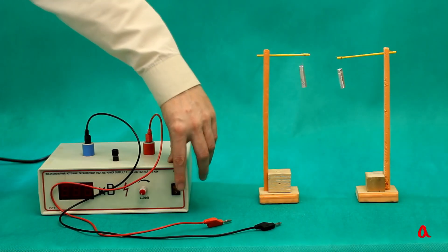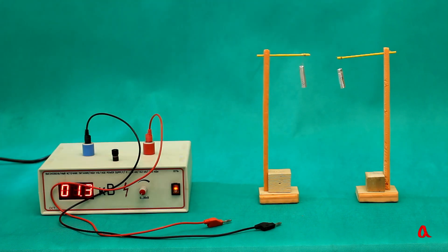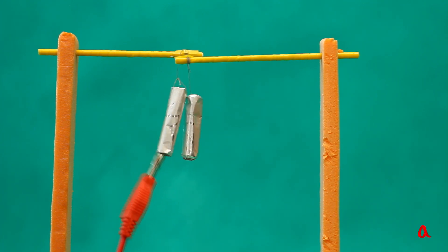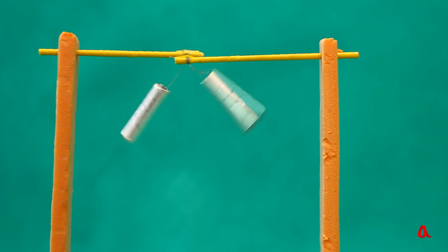In this experiment we are going to charge the collets from a higher voltage power source instead of a balloon. We charge both collets from the black cable and see that they repel one another. Now we charge them from the red cable and they repel each other just the same.